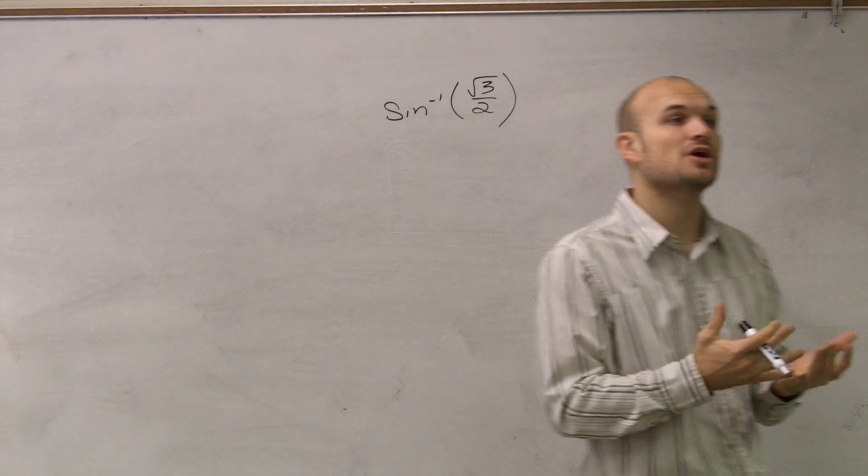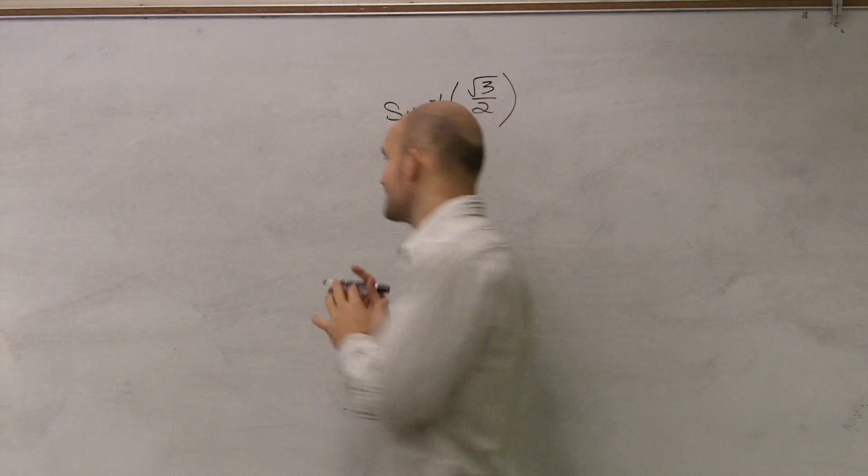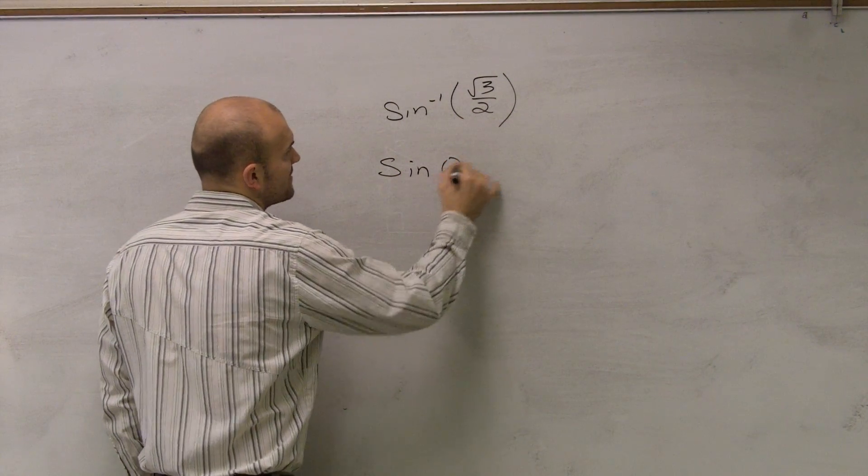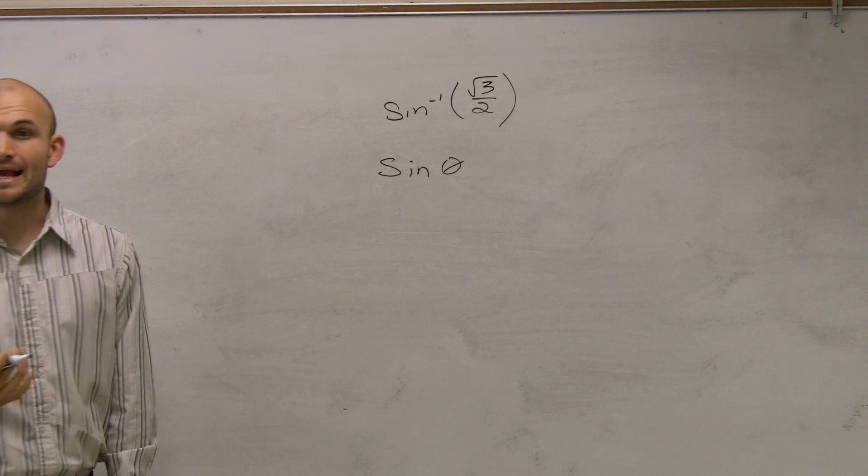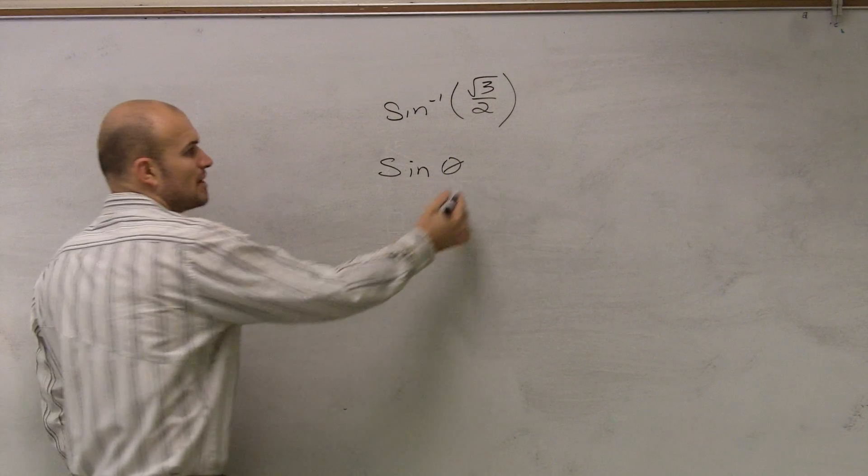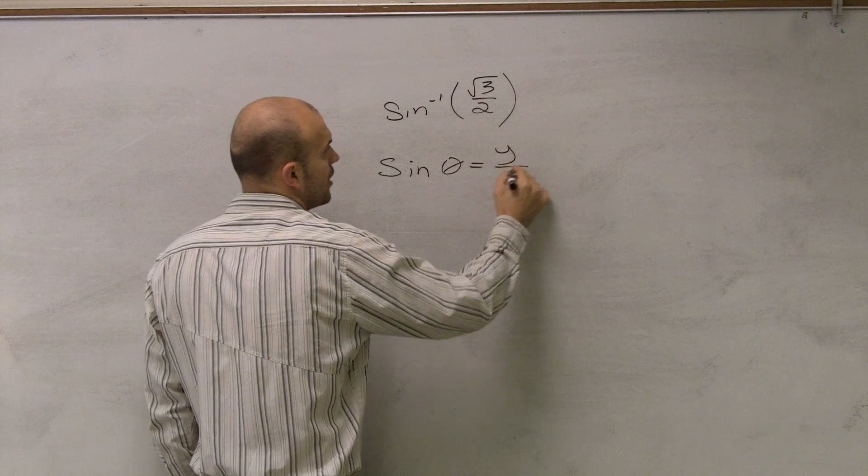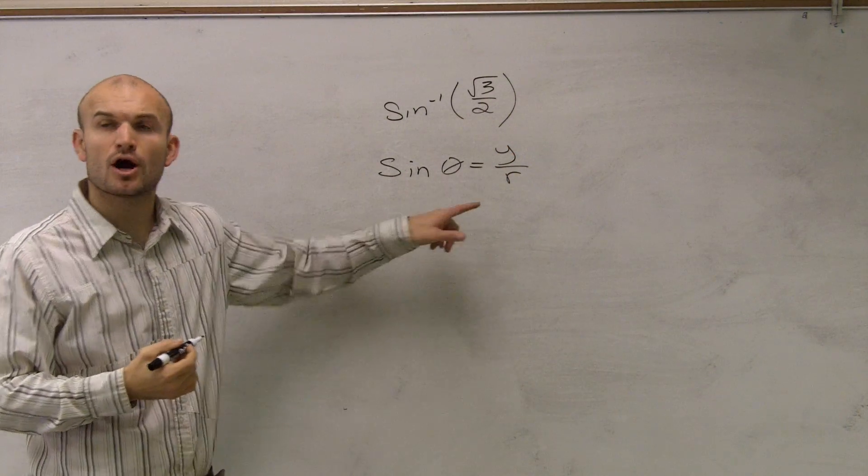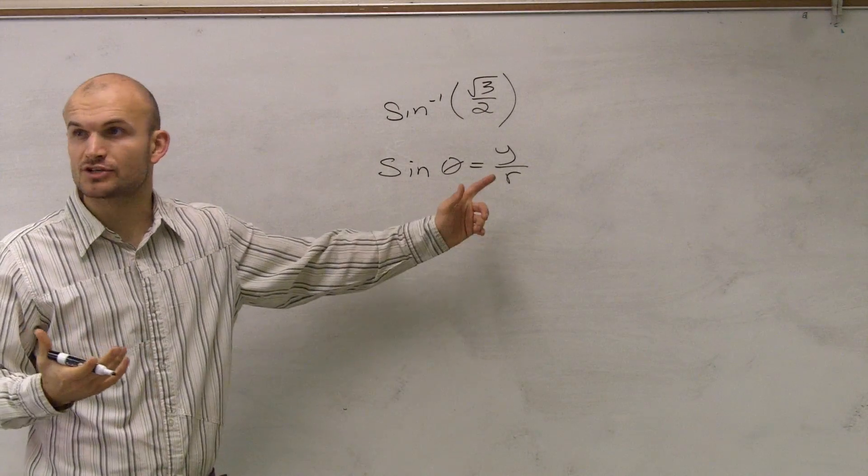A couple things we need to remember about what exactly is our inverse sine. One thing I want to remind you guys of is, if we're trying to find the sine of an angle, that's going to represent our y over our r as like a coordinate point, right? Where r is going to represent the hypotenuse of like a triangle.